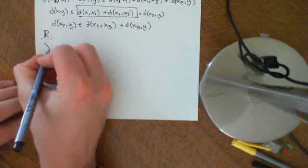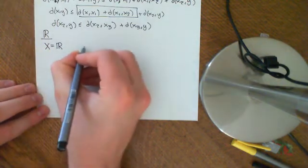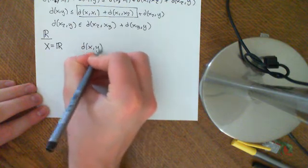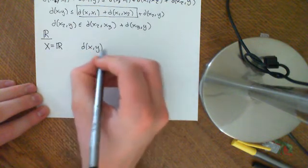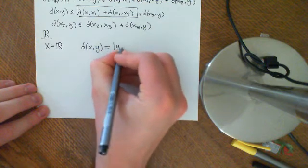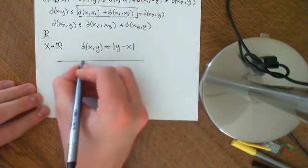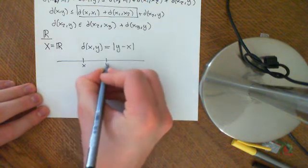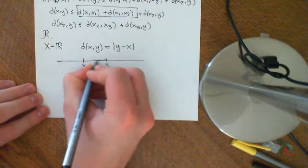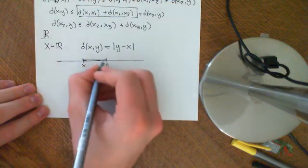We let our abstract set equal the set of all the real numbers, and we let the distance between any two points x and y, which are elements of the real numbers, be equal to the modulus of y minus x. So basically, if we have a picture with two points x and y in the real numbers, we are defining the distance between them to be the absolute value of y minus x.